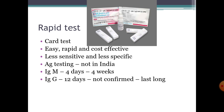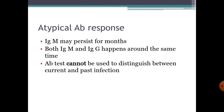There is an atypical antibody response observed in COVID-19 patients. IgM may persist for months, so there may be a period when both IgM and IgG antibodies are present at the same time. Therefore, these antibody tests cannot be used to distinguish between current and past infection.